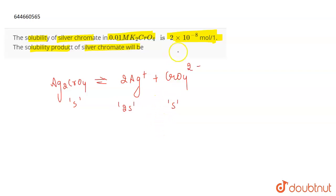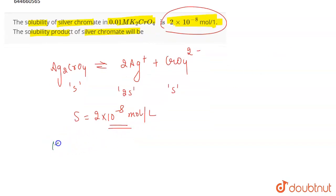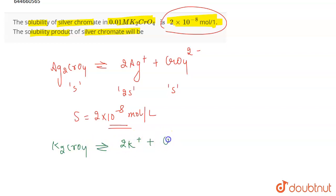As per the question, the solubility of Ag₂CrO₄ is given as 2 × 10⁻⁸ mol/L, and this solubility is given in 0.01 molar K₂CrO₄. When K₂CrO₄ dissociates, it gives 2K⁺ plus CrO₄²⁻.